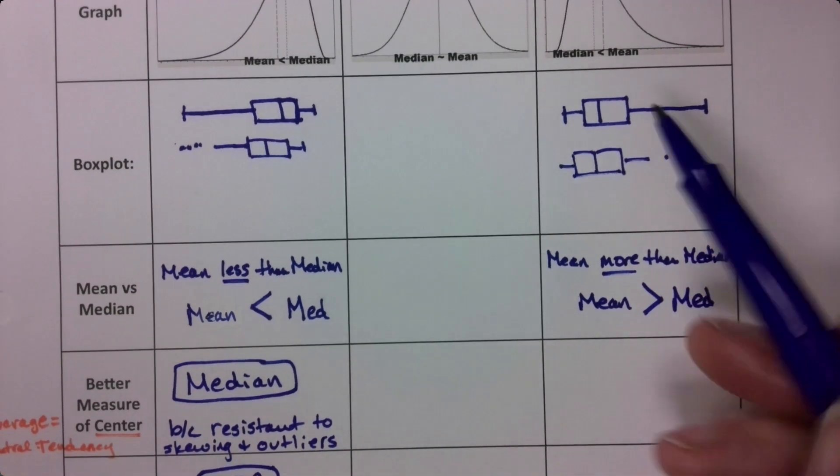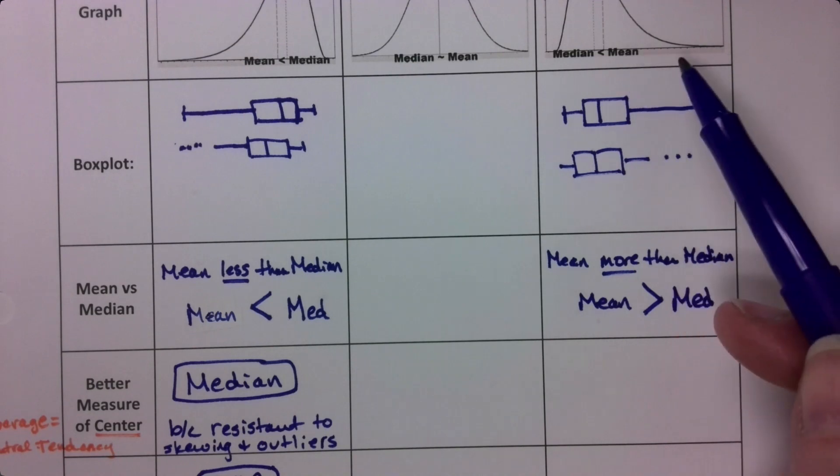The way that we write that in math is we say the mean is greater than the median. Alligator eats the mean because it's bigger. The mean is getting pulled to the high side because of the skewing.